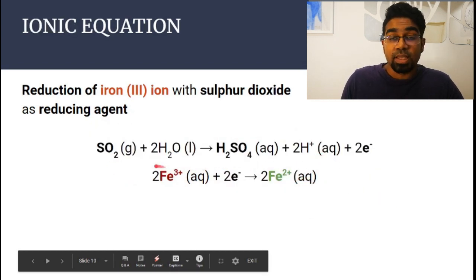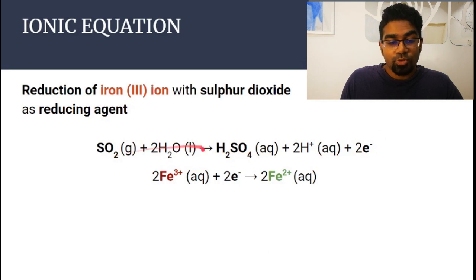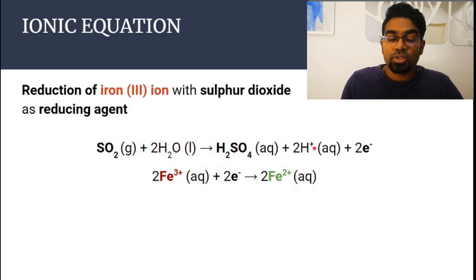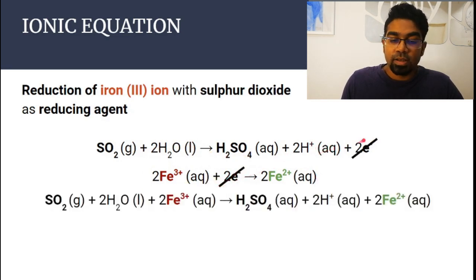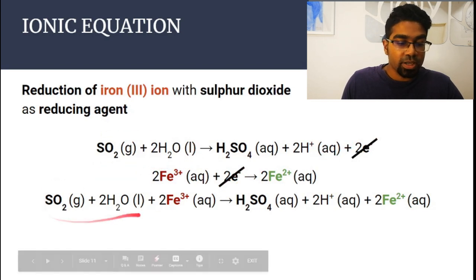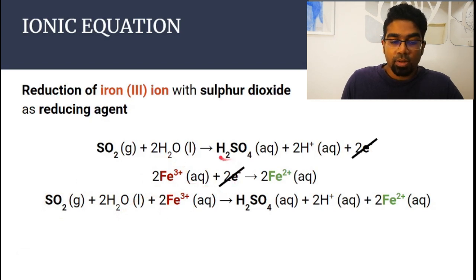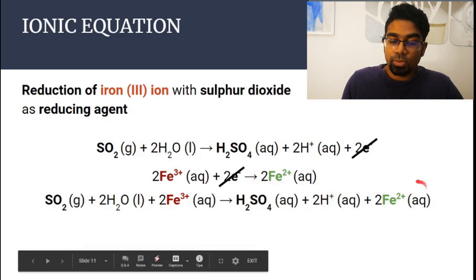The half equation for iron is the same as before. Since two electrons are lost in the sulfur dioxide half equation, two electrons also have to be gained by iron-3 ions to be reduced to iron-2 ions — two electrons lost, two electrons gained. We cancel the electrons and combine both half equations to form the full ionic equation. On the left we have sulfur dioxide, water, and two Fe³⁺ ions. On the right we have sulfate ion, two hydrogen ions, and two Fe²⁺ ions.